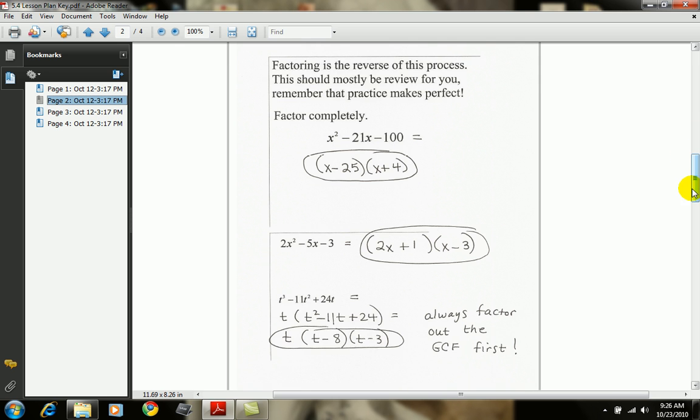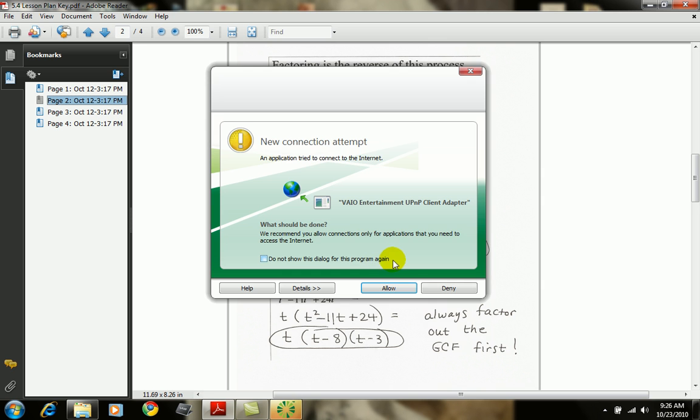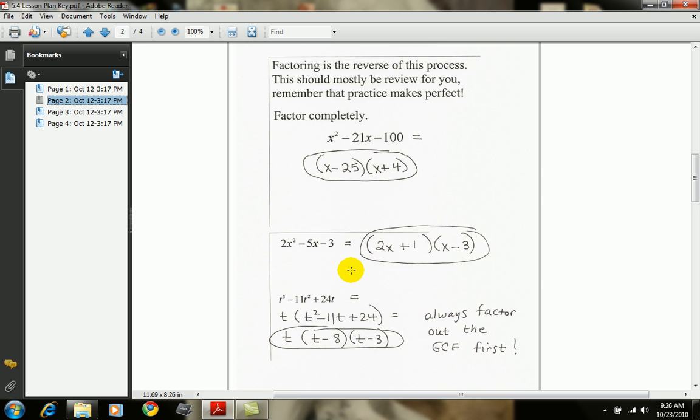So if we looked at this next example, 2x squared minus 5x minus 3, the first thing I would do is look for a GCF, but the only GCF here is a 1. So then, because it's a trinomial, because there were three terms, I try the FOIL method. And in the front I would need 2x squared, so I have a 2x and an x. In the back I need a negative 3, so I'm going to try a positive 1 and a negative 3.